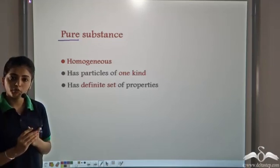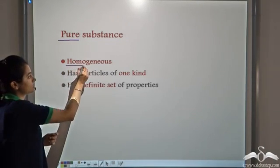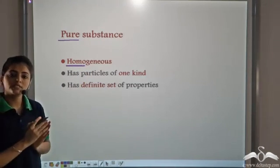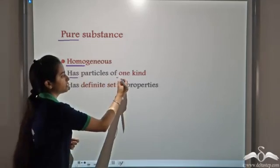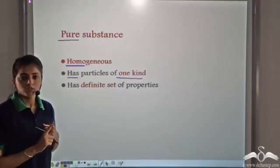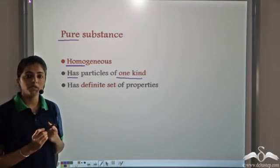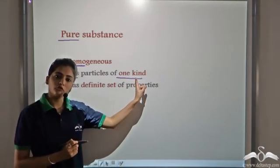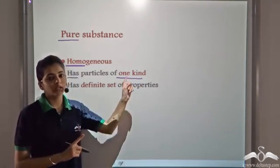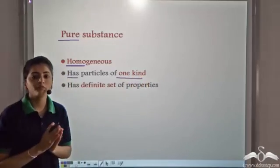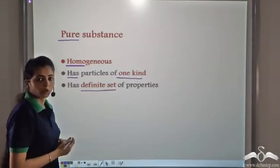The properties of pure substances are that they are always homogeneous. They have the same composition throughout their mass. They have particles of only one kind. So we have elements and compounds as pure substances. Elements are made up of only one kind of atoms and compounds are made up of only one kind of molecules. So they have particles of only one kind and they have definite set of properties.